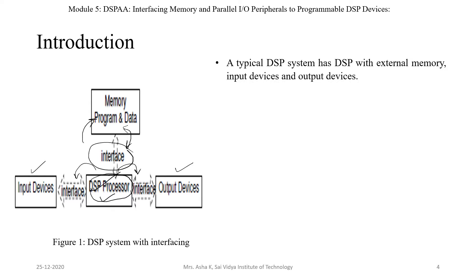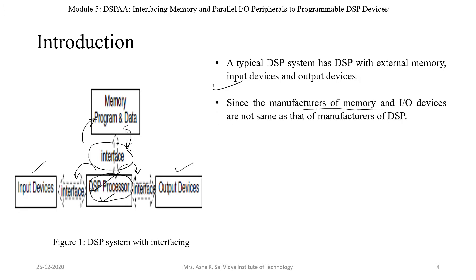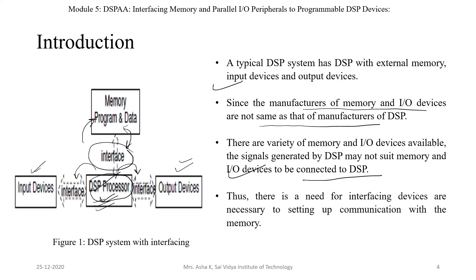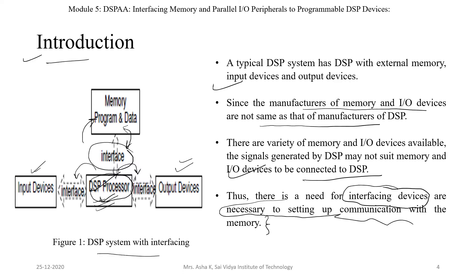A typical DSP system with external memory and input-output devices is shown in figure 1. The manufacturers of the memories and input-output devices are not the same as the manufacturer of the DSP. The DSP may be manufactured by Texas Instruments, Motorola, or ADSP devices, while input and output devices may be manufactured by other manufacturers. There are a variety of memory and input-output devices available. The signals generated by the DSP may not suit the memory and input-output devices connected to it. In such cases, we need an interfacing device, which is necessary to set up communication between the memories and the DSP processor.